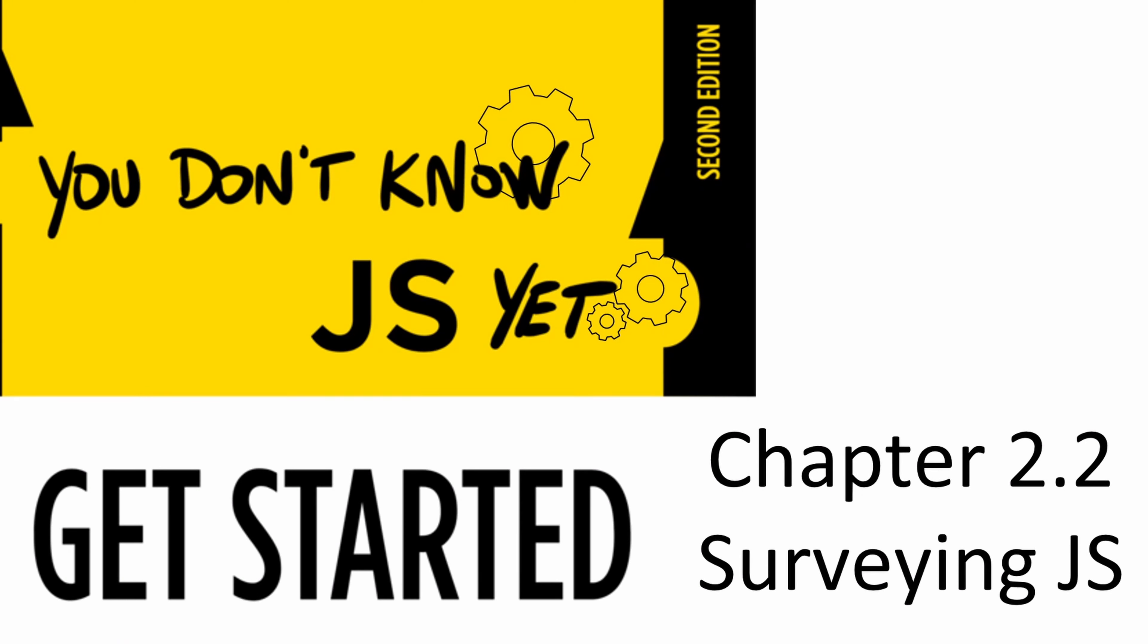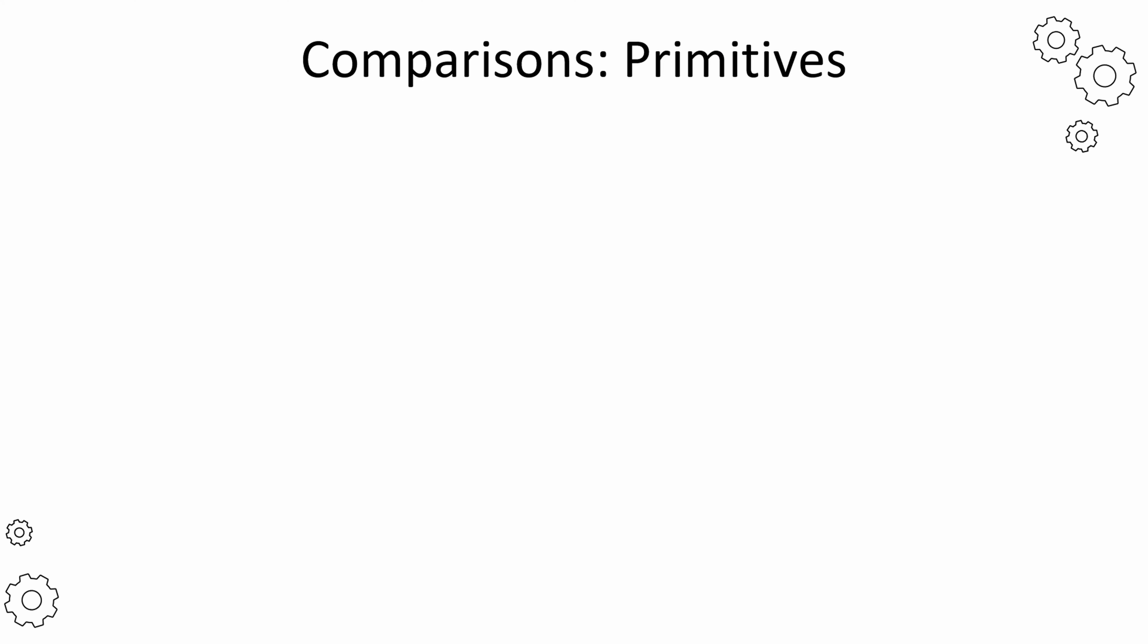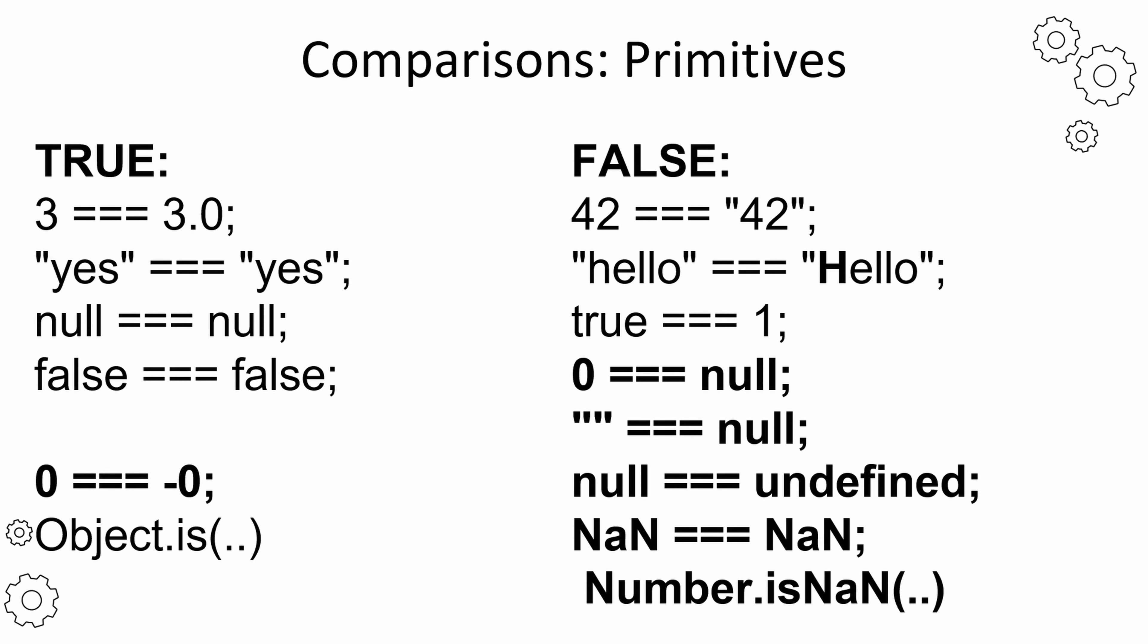This is the second video of Chapter 2. In this video, we are focusing on comparisons in JavaScript. We have the triple equal operator for primitives. This operator checks the type and the value of the two operands.